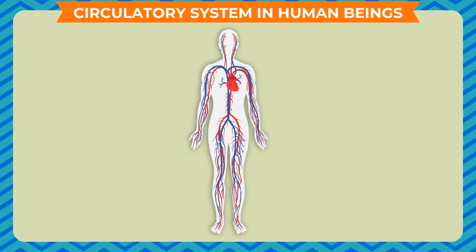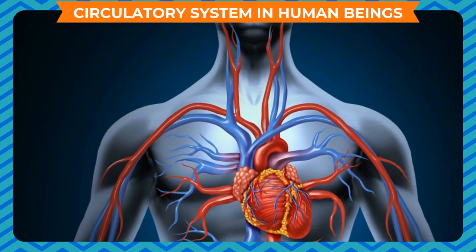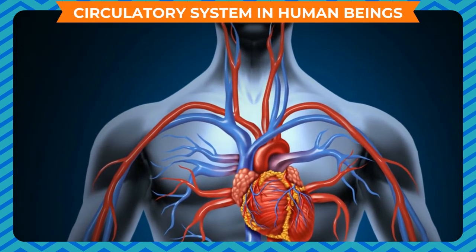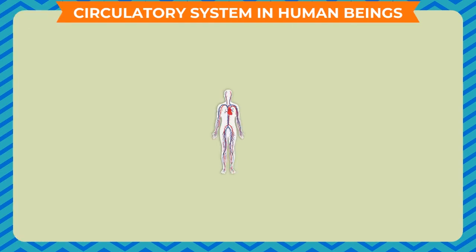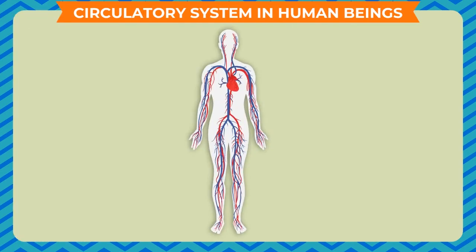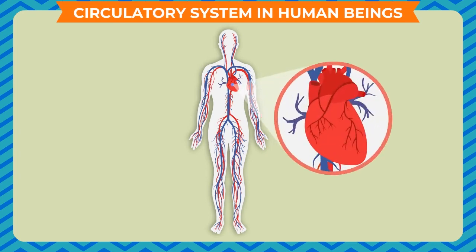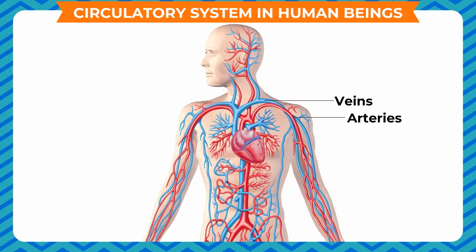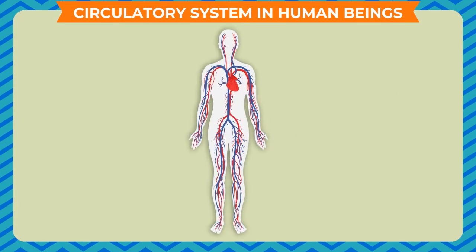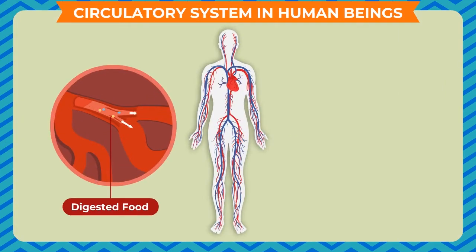Circulatory System in Human Beings: Multicellular organisms, including human beings, have a well-developed circulatory system. The main components of this organ system are the heart, blood, and blood vessels which include veins, arteries and blood capillaries. Blood carries things like digested food, oxygen, and wastes to various sites.